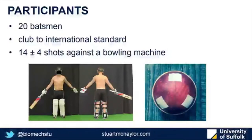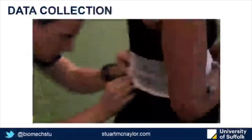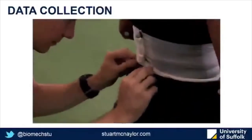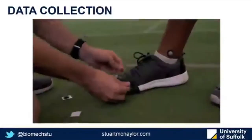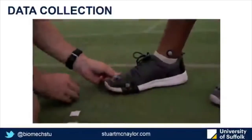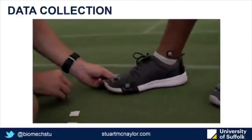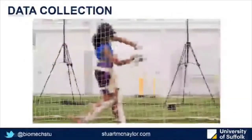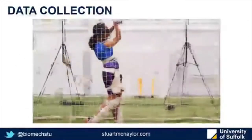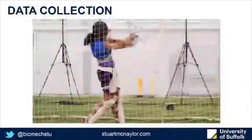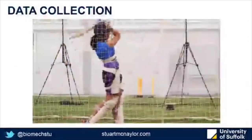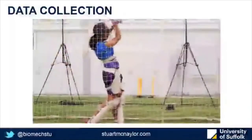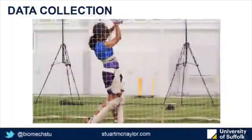They all performed a series of shots against a bowling machine. Here's a video example from a female participant in another study, with reflective markers stuck to joints all over the participant, including on the pads, on the bat, and reflective tape on the ball. We recorded this using 3D motion capture Vicon cameras.